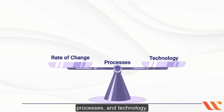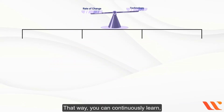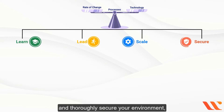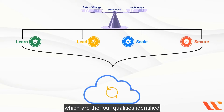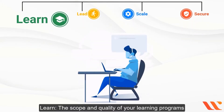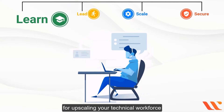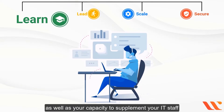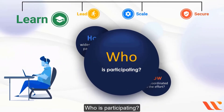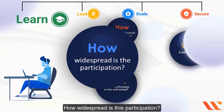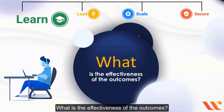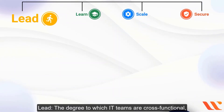The objective is to strike a balance across your people, processes, and technology so that you can continuously learn, effectively lead, scale efficiently, and thoroughly secure your environment. These are the four qualities identified as driving cloud success. For Learn: consider the scope and quality of your learning programs for upskilling your technical workforce, as well as your capacity to supplement IT staff with skilled partners.